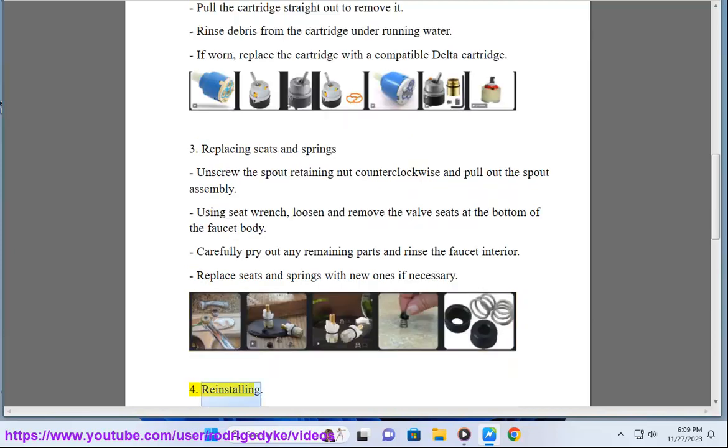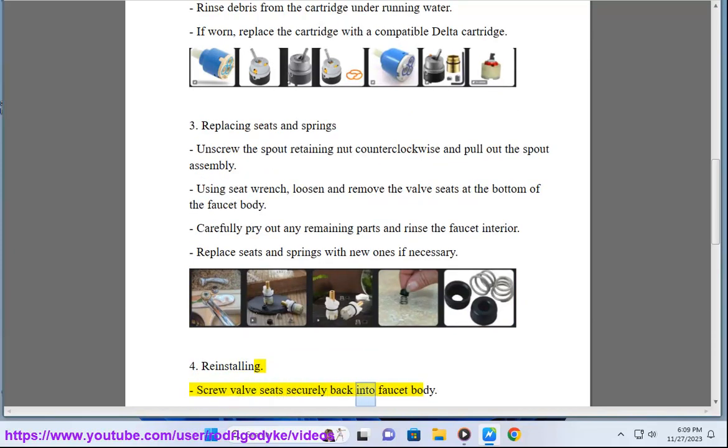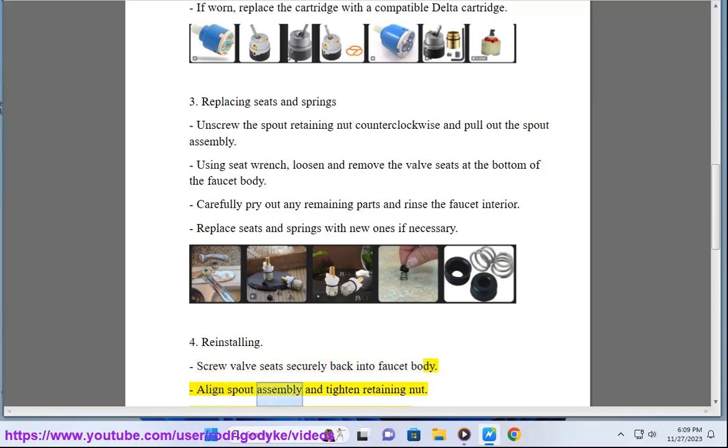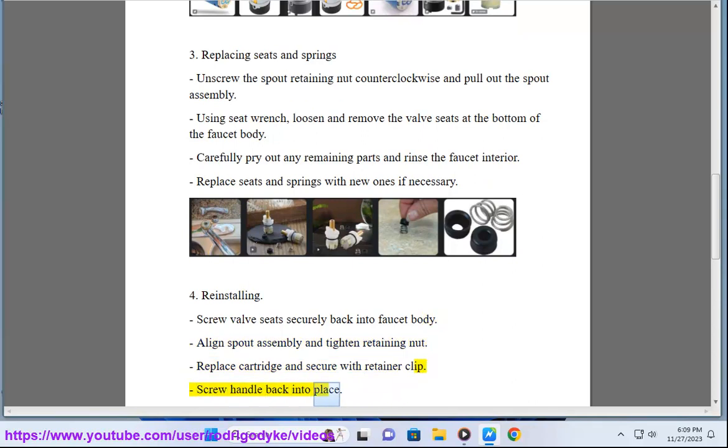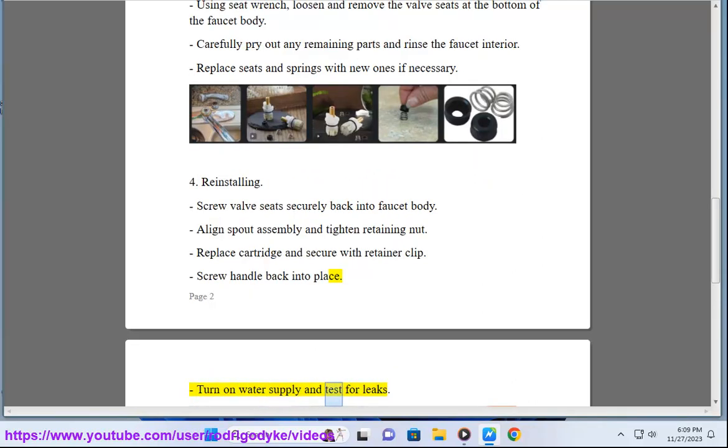Fourth, reinstalling. Screw valve seats securely back into the faucet body. Align spout assembly and tighten retaining nut. Replace cartridge and secure with retainer clip. Screw handle back into place. Turn on water supply and test for leaks.